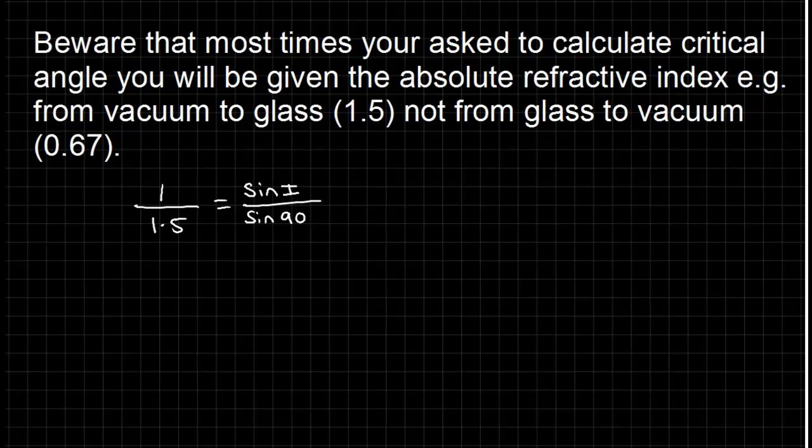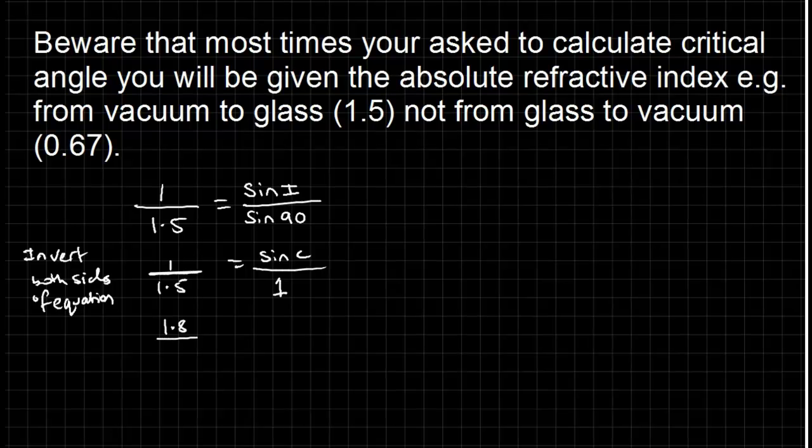So, taking the inverse and subbing the numbers into Snell's Law, 1 over 1.5, for instance, would be equal to sine i over sine 90. Sine 90 is equal to 1, and then you can just invert both sides of the equation to simplify it down. 1.5 over 1 is just 1.5, and you've got 1.5 is equal to 1 over sine r.